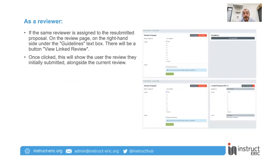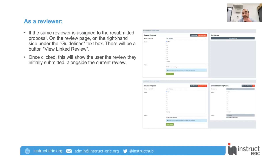Now as a reviewer, you can actually see your old review. This only works in the case where you are the one making the review — you can't review on behalf of someone else and see their review, as that would be a breach of information. But if you're reviewing the resubmitted proposal and you were a reviewer in both cases, there'll be a little button in the right-hand corner that says 'View Linked Review'. That will essentially open up the review you gave to the last proposal, in case you want to use some of it as a reference, copy it, or make some changes — but at least it's there as a reference, because it's essentially the same proposal with some tweaks.